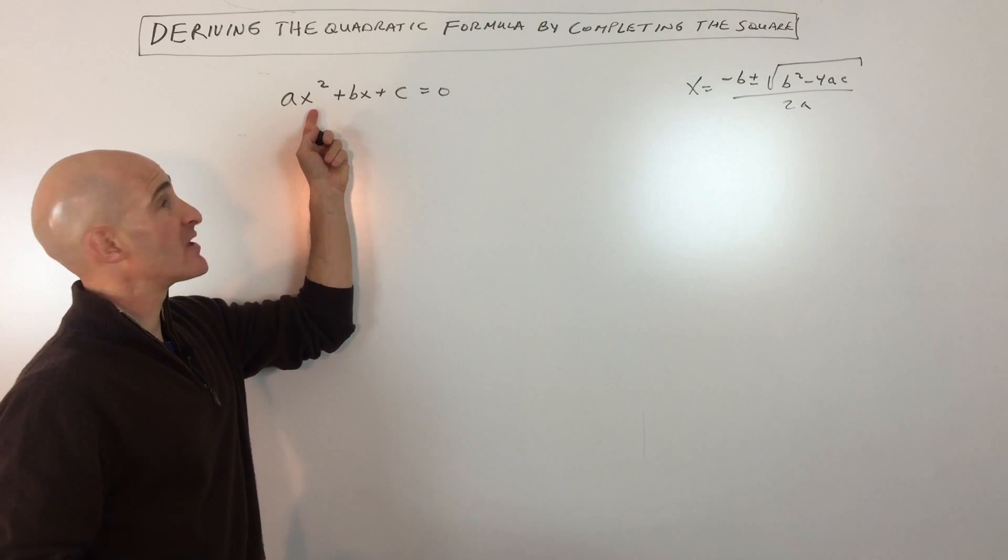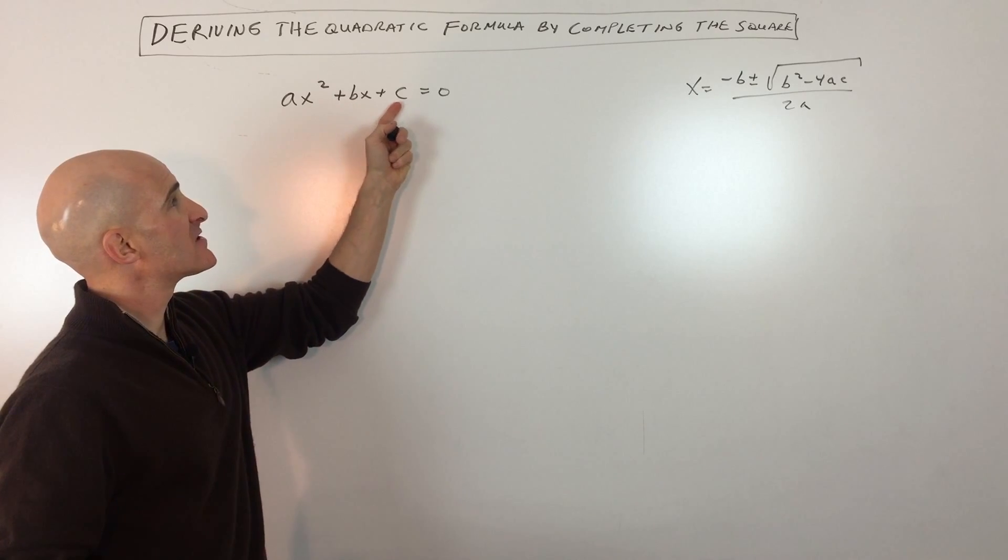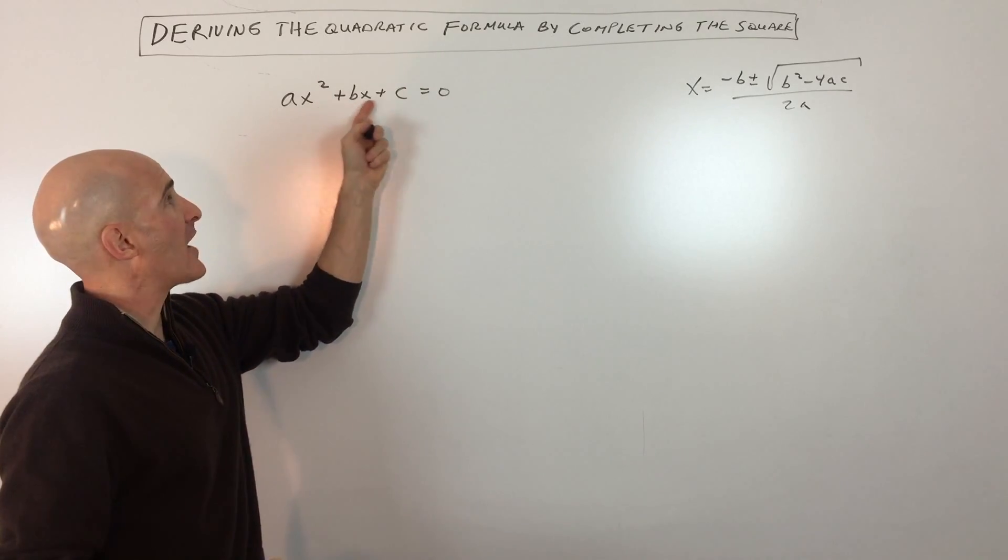A quadratic equation is an equation that has a variable to the second degree. So this is a quadratic, and you can see this is set equal to zero, and we're trying to solve for x.